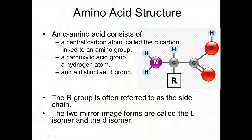Amino acids exist as two mirror image forms: the L-isomer and the D-isomer. In the body, only the L-form is present because enzymes in our body can only work on the L-form and cannot act on the D-form.